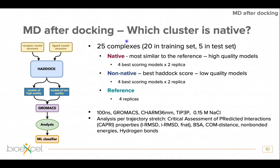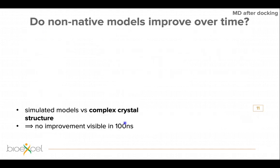We simulated 25 complexes docked by HADDOCK using the standard HADDOCK procedure. Complexes were divided into high quality models — called native — and low quality models — non-native — which are still relatively highly ranked clusters. We also simulated the reference structures for comparison. We analyzed a number of properties: the CAPRI properties such as ligand RMSD, interface RMSD, fraction of native contacts, buried surface area, distance between proteins, non-bonded energies, and number of hydrogen bonds.